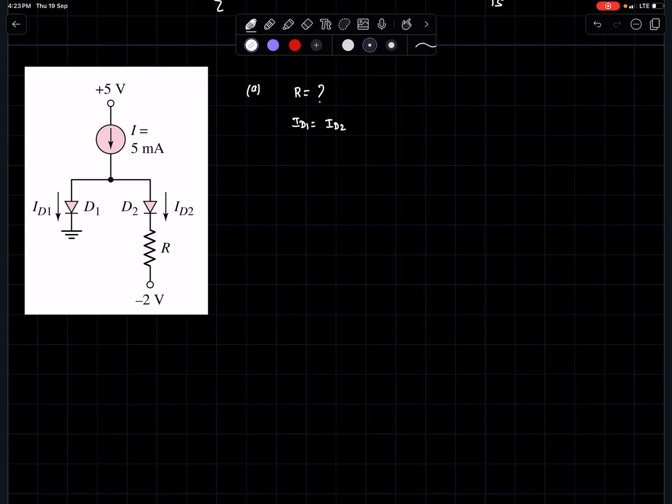From the circuit given, it's clear that I equals id1 plus id2. The problem mentions that the cutting voltage of each diode when conducting is 0.7 volts.